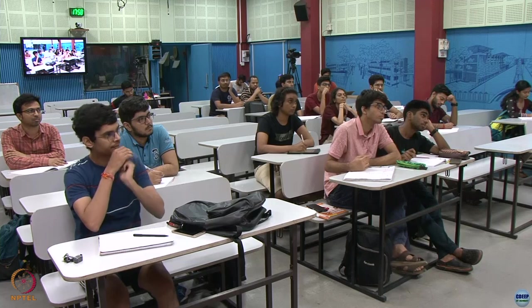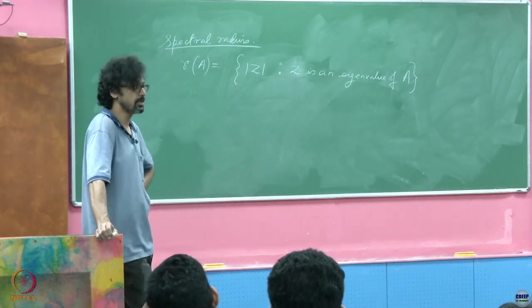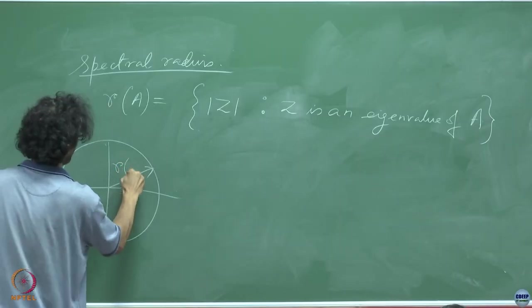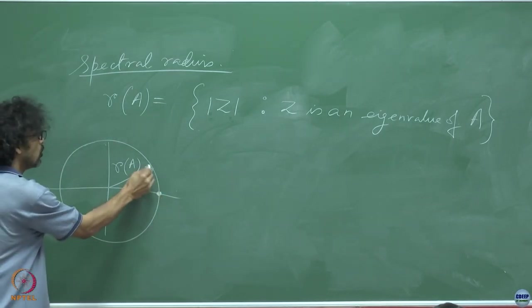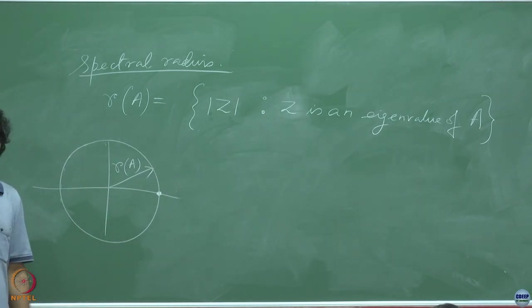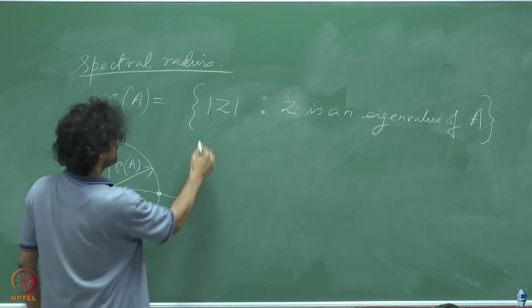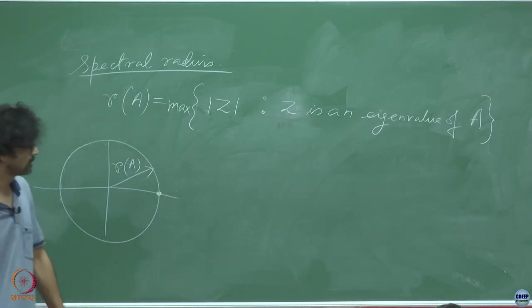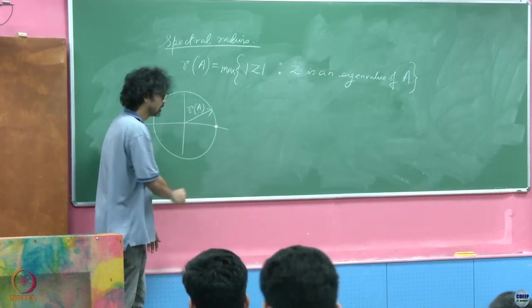For a positive matrix, the spectral radius is exactly an eigenvalue, and no other eigenvalue can have exactly the same magnitude. If you draw a circle of radius R(A) in the complex plane, there is only one eigenvalue sitting on that circle for a positive matrix — everything else is strictly inside it.